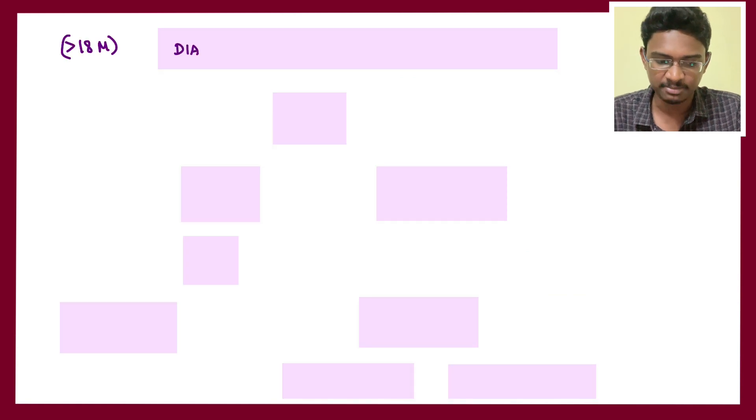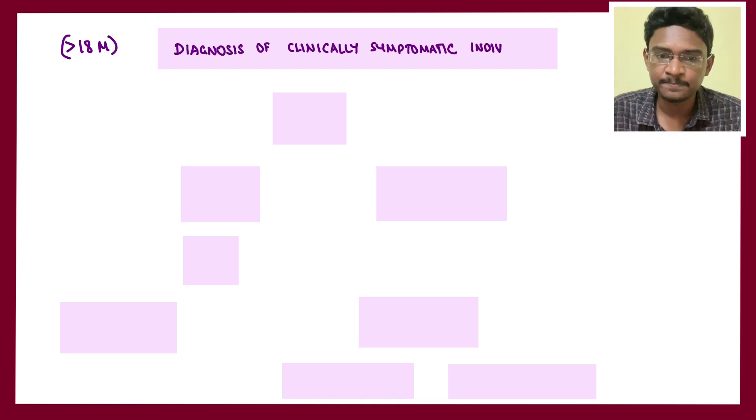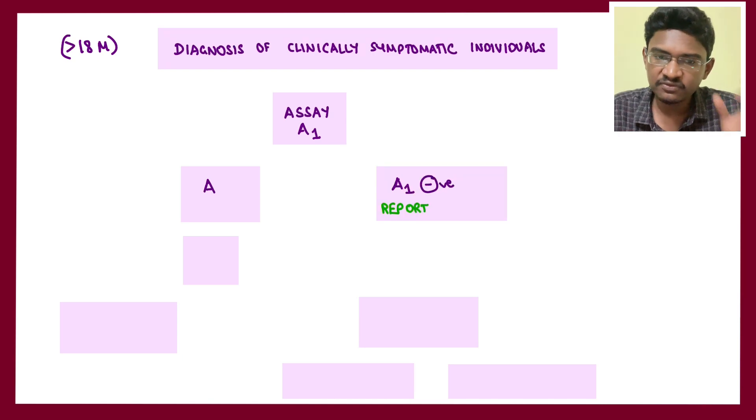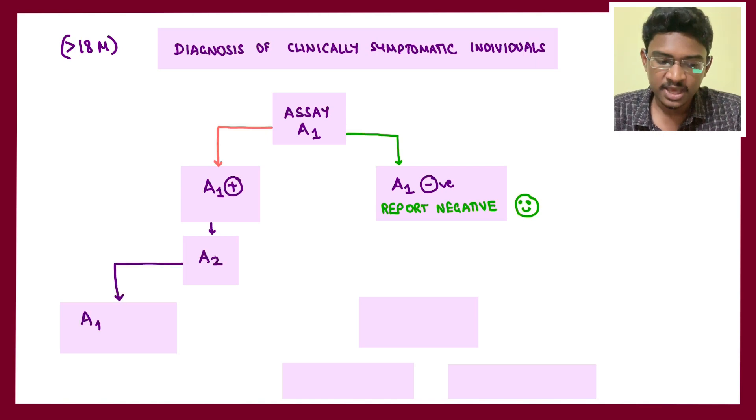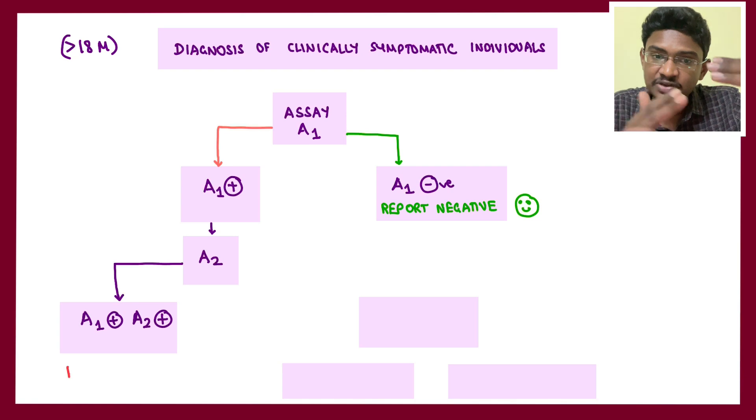If patient has clinical features similar to HIV, NACO has given recent guidelines for sequential testing, not simultaneous. First they will do assay one. If it is negative, report as negative. If assay one is positive, go for the second test. If second test is also positive sequentially, the person is diagnosed as HIV and counseled for treatment.